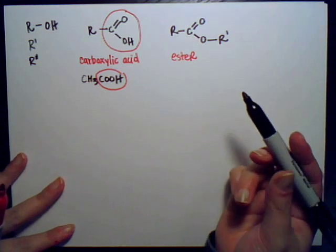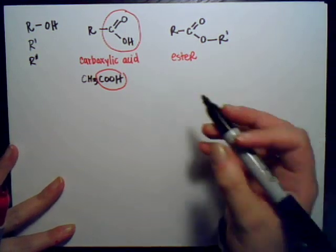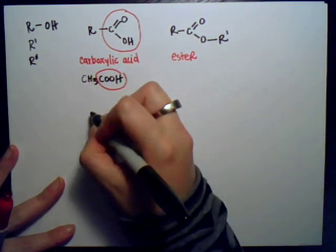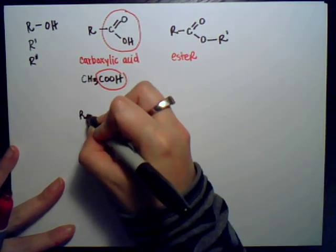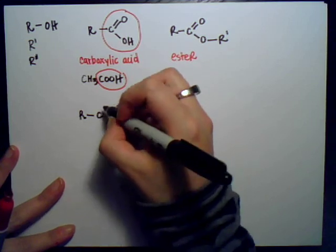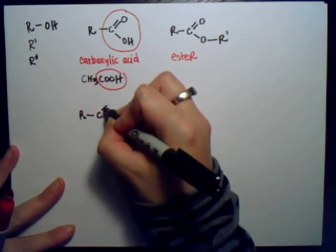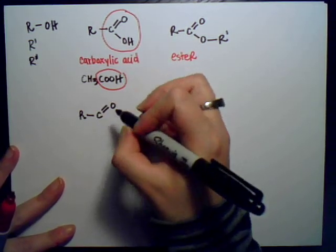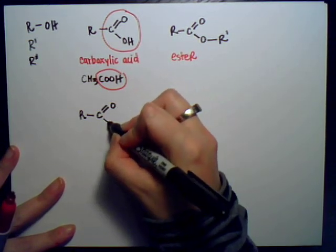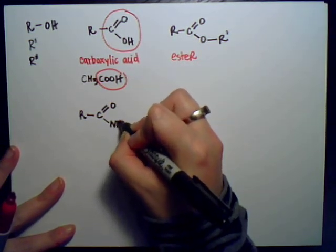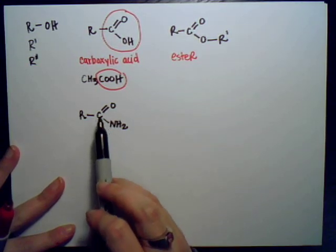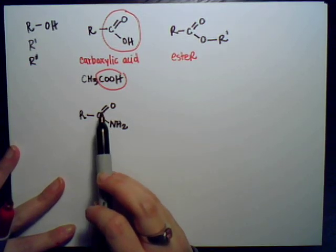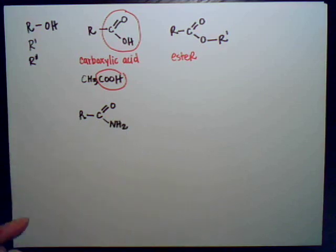Amide groups: you'll have a nitrogen and a double bonded O. This is an amide group.